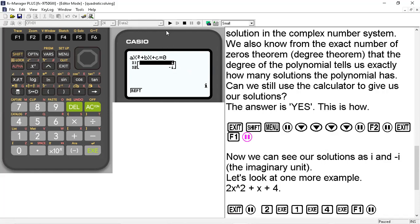Now let's look at one more example. So we'll go back to the coefficient screen. And we'll go ahead and type in 2 for 2x² + 1x + 4. So we type in our coefficients, hitting exe after each coefficient is typed in. We hit F1 to solve.